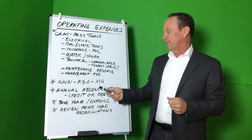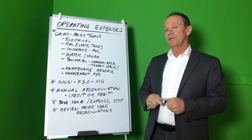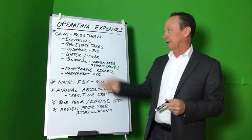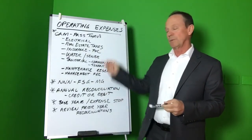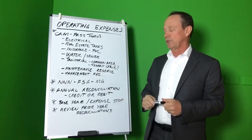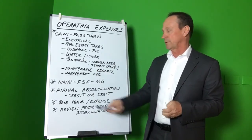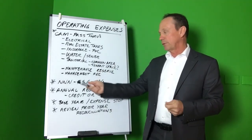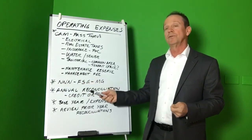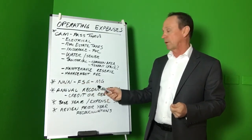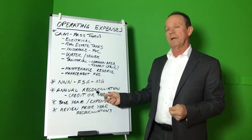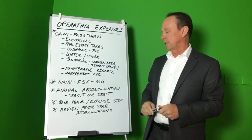There are three different types of leases and how these expenses are handled differs in each case. You have the triple net, the full service gross, and the modified gross. All of them are subject to an annual reconciliation.